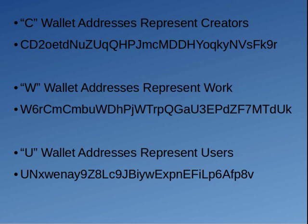Basically, all a blockchain is, is a list or a ledger that keeps track of itself. When we're talking about different products you're trying to create, if they're digital, all these files I've shown you can be represented digitally. You can also represent them through a wallet address. You would need wallet addresses for three different types of people — three distinct categories. The first wallet address I'm going to call a C wallet address, and it will represent creators.